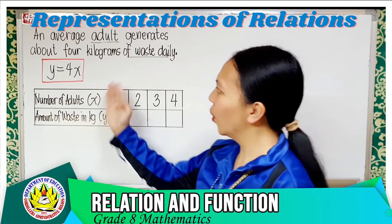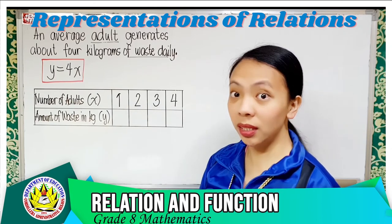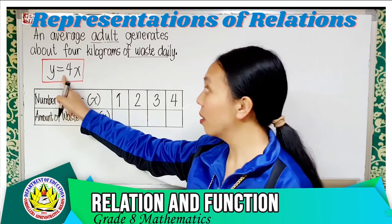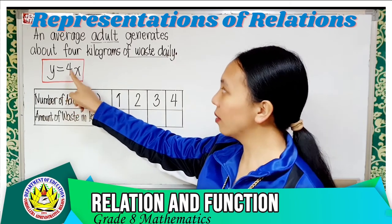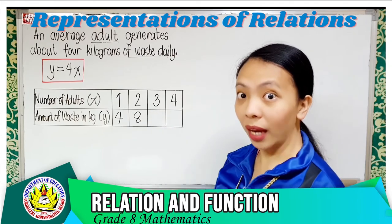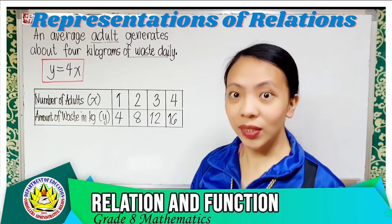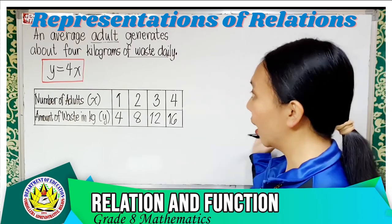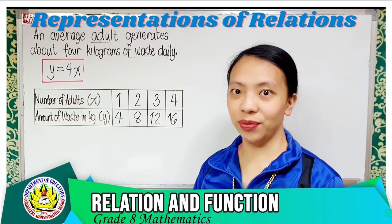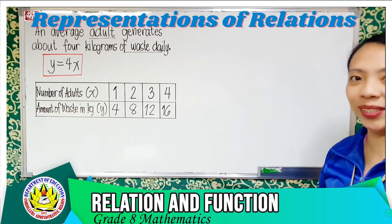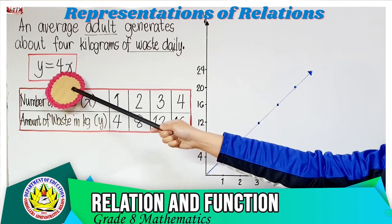It is 4 times 1, which equals 4 kg. Two adults: 4 times 2 equals 8. Three adults: 12. Four adults: 16. Five adults: 20. Six adults: 24, and so on. From this table of values we can now construct or draw the graph. Here is the graph of y = 4x.